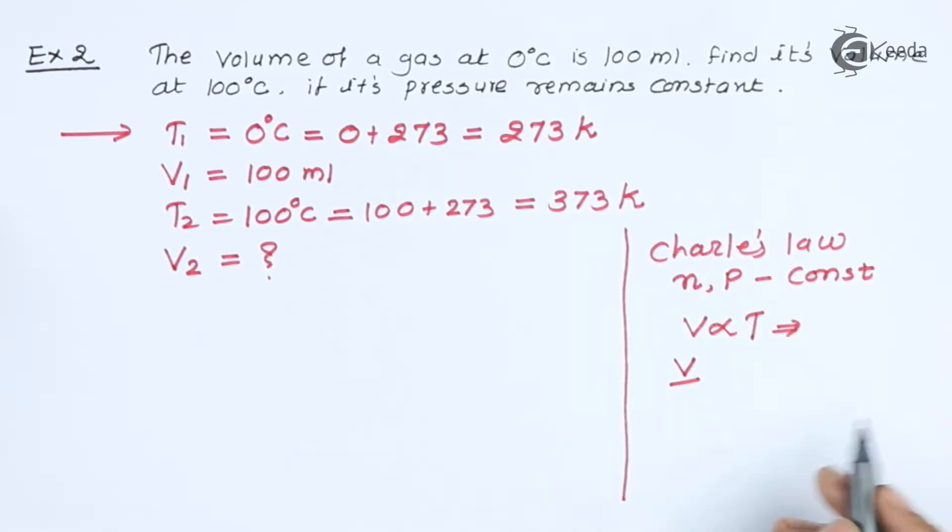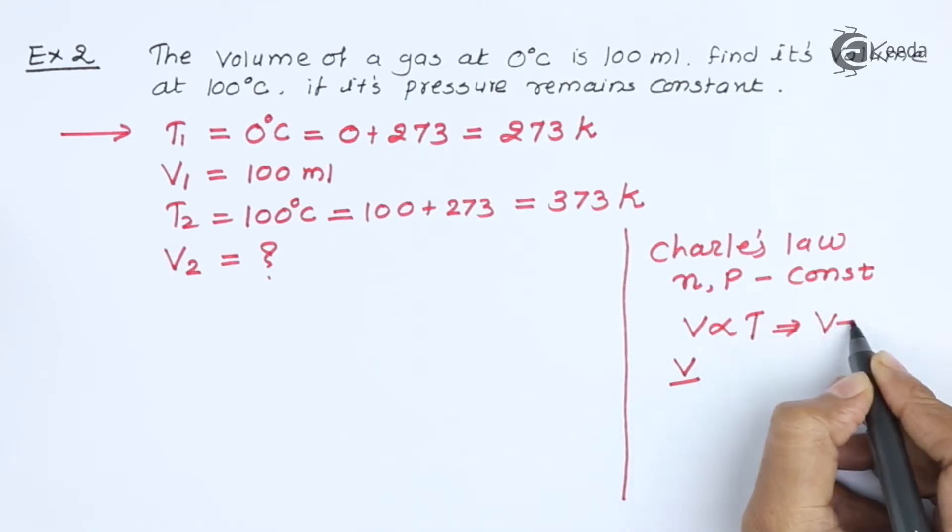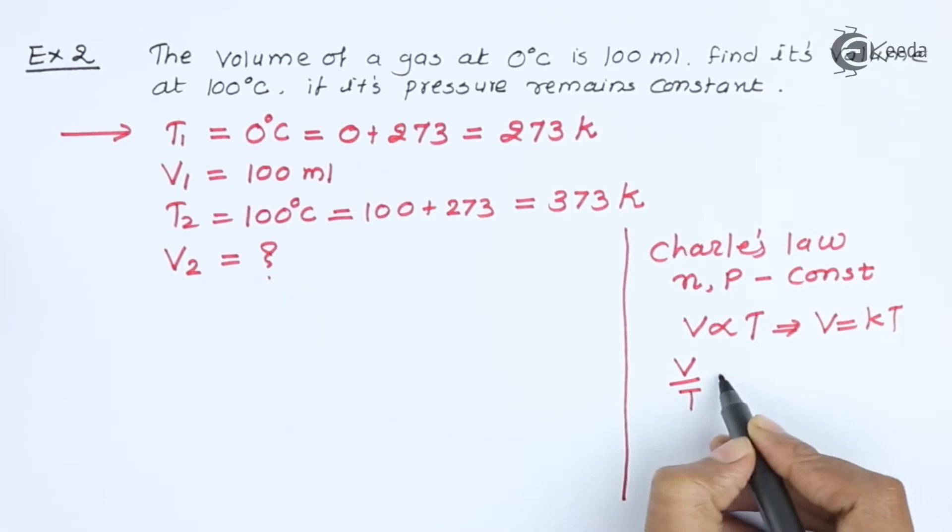If you want to remove the proportionality sign, we will write V is equal to KT. So V by T is equal to constant. Hence, we can write V1 by T1 is equal to V2 by T2.